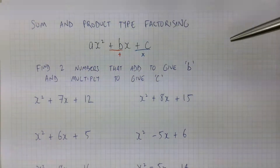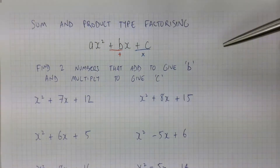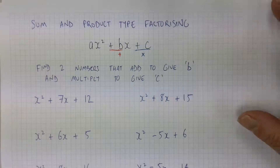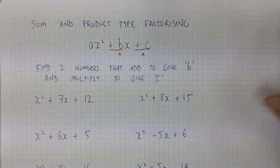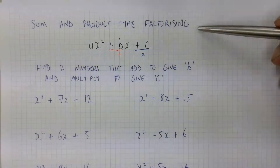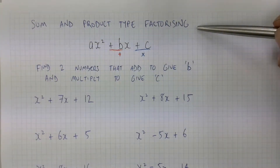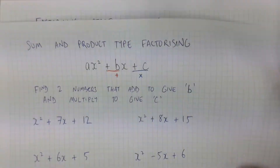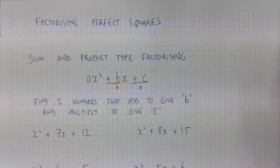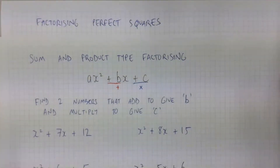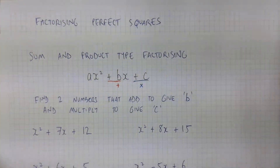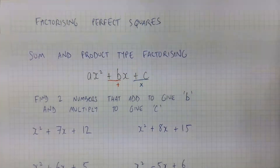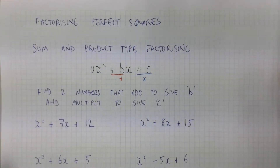In this video I want to show you a couple of different types of factorizing with a few examples. I'm going to start with the sum of products type of factorizing, and then I'm going to go into factorizing perfect squares — which if you can see a bit of a pattern, there's a bit of a shortcut, otherwise you can just use the same process.